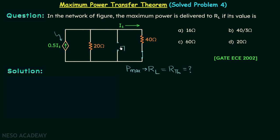What is Rth? Rth is equal to 0.5i1 in parallel with 20 ohms in parallel with 40 ohms. There is a problem: we have one dependent source in parallel with two parallel resistors, and therefore we cannot calculate Rth directly. If you remember, we have already handled this kind of situation in Thevenin's Theorem.